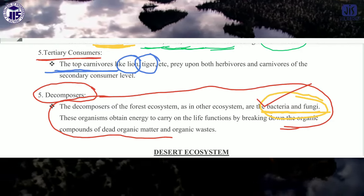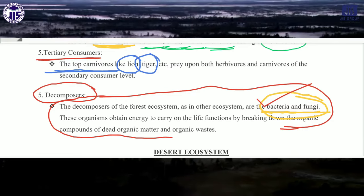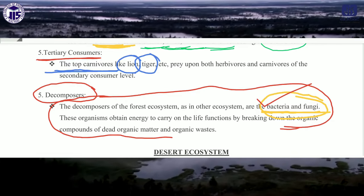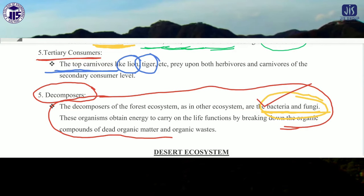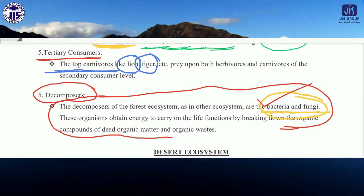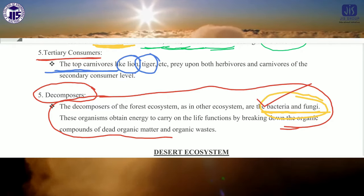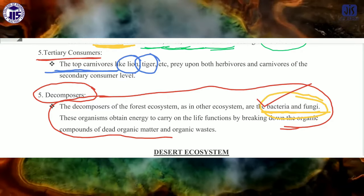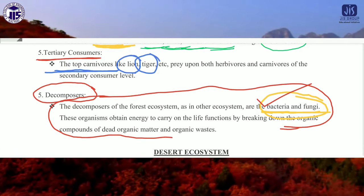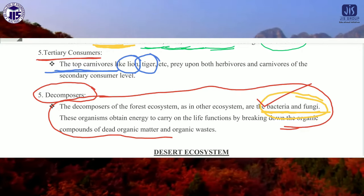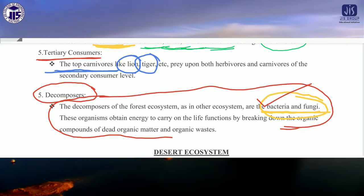This is the overall classification of the forest ecosystem. For exam questions, you can expect a short note where you must mention all points — starting from abiotic components, then biotic components, then producer, then different kinds of consumers, and then decomposer with proper examples.